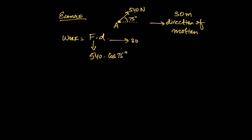So if you then multiply these two numbers together, 540 cosine of 75 degrees times 30 meters, you're going to find that the amount of work that you did to move this wheelbarrow is 4200 joules.